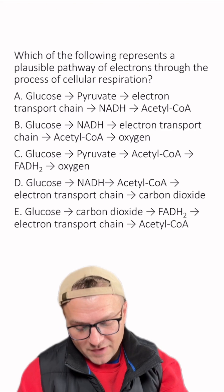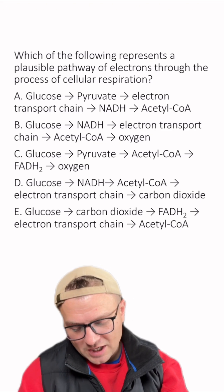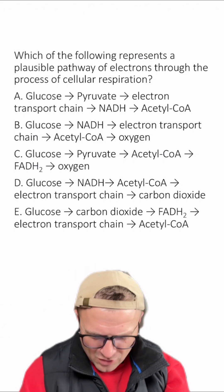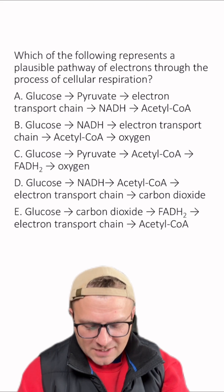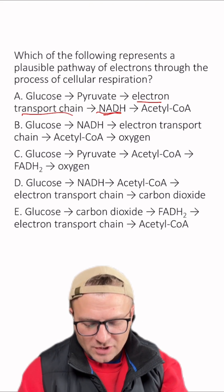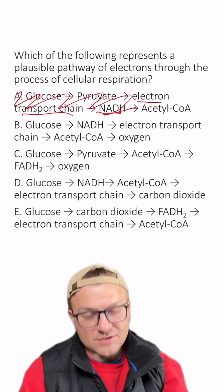Let's look at A. Glucose, pyruvate, that's good. Electron transport chain, no, not really. NADH, nope. The NADH would come before the electron transport chain, so this one is wrong.